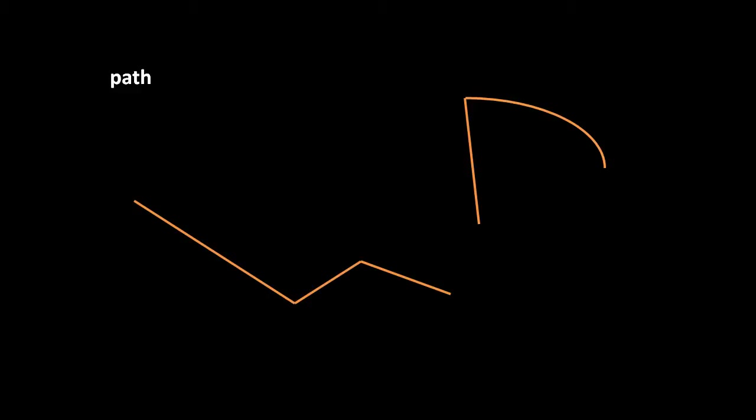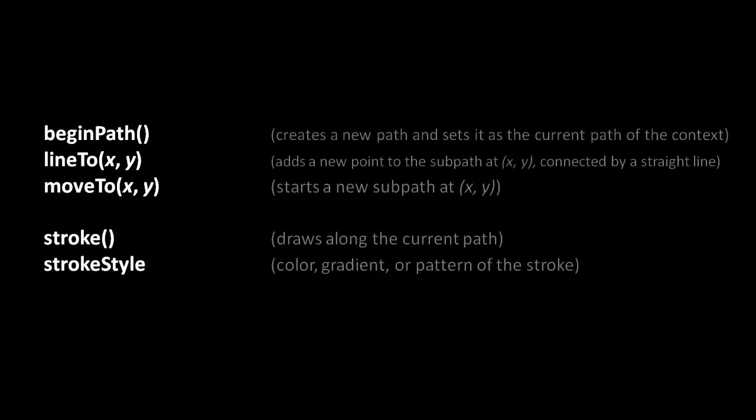At any one time there is one path associated with the context. Upon creation of the canvas, this path starts out empty, but you can reset it with the beginPath method. A new path starts with no coordinates at all. If you invoke lineTo or moveTo with a specified coordinate, that creates the first subpath and gives it its first coordinate. After that first coordinate, lineTo and moveTo work differently: lineTo extends the current subpath with a line to the specified coordinate, while moveTo creates a new subpath at the specified coordinate, introducing a break in the path. Once we have our path the way we want it, we can stroke it with the stroke method.